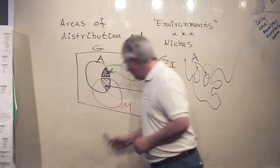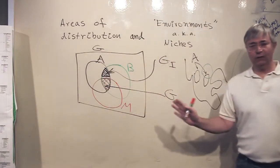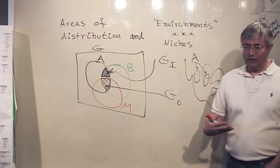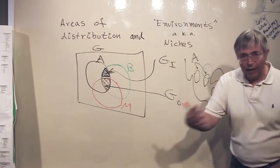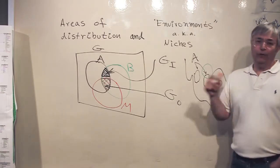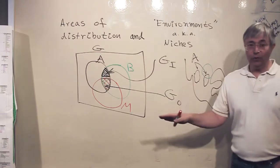The M circle means the areas that the species has been able to occupy, to sample, and whether those areas are suitable or not.